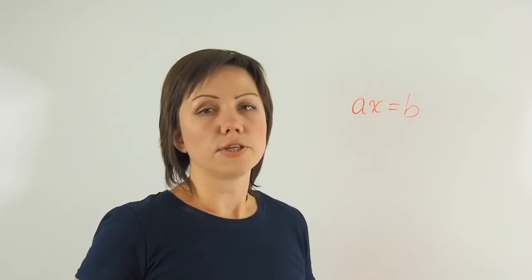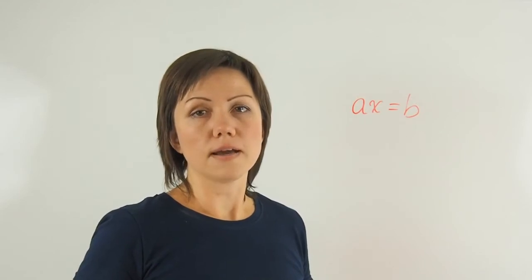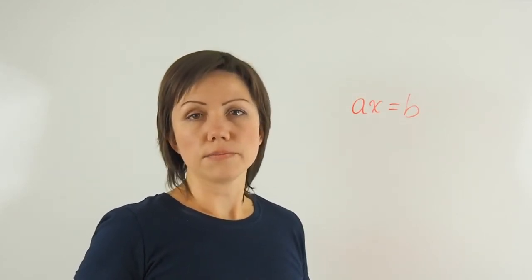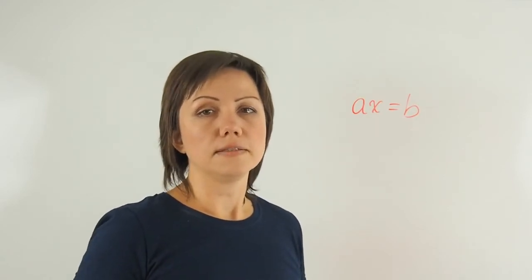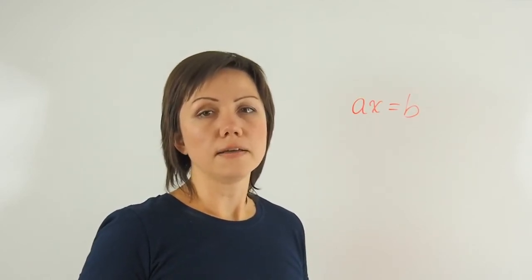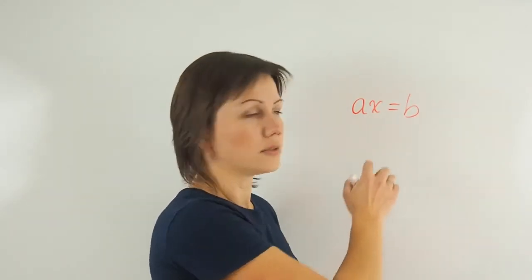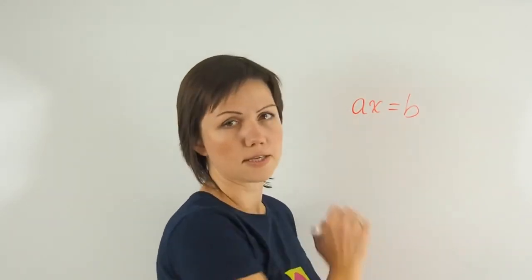Next, you are trying to isolate for the unknown. So you will collect like terms with variables and constants, and you will then divide by the coefficient of the unknown. The coefficient in this case is A.